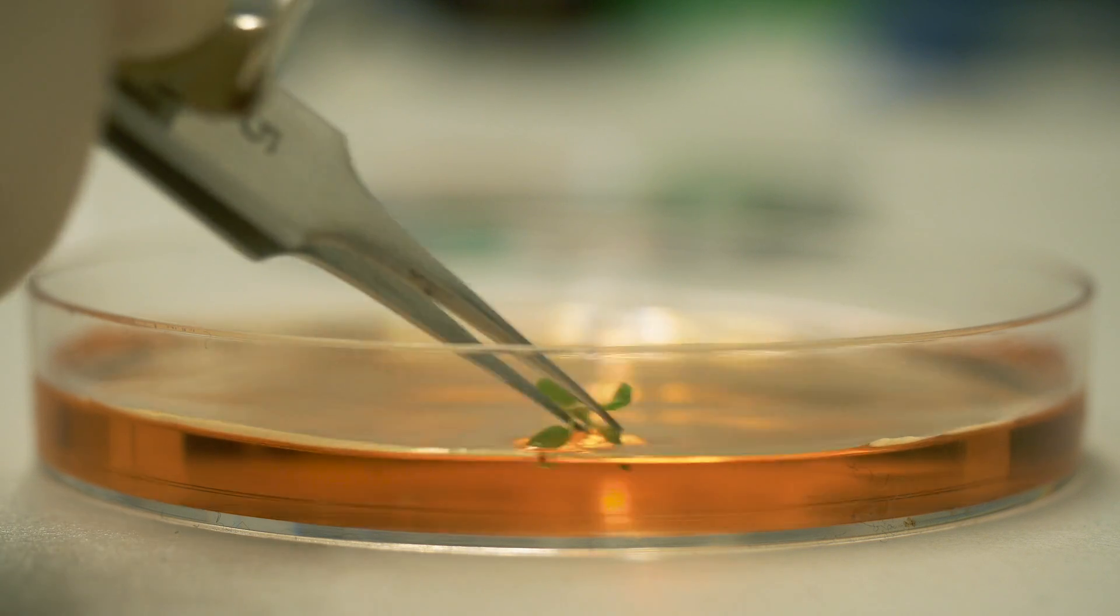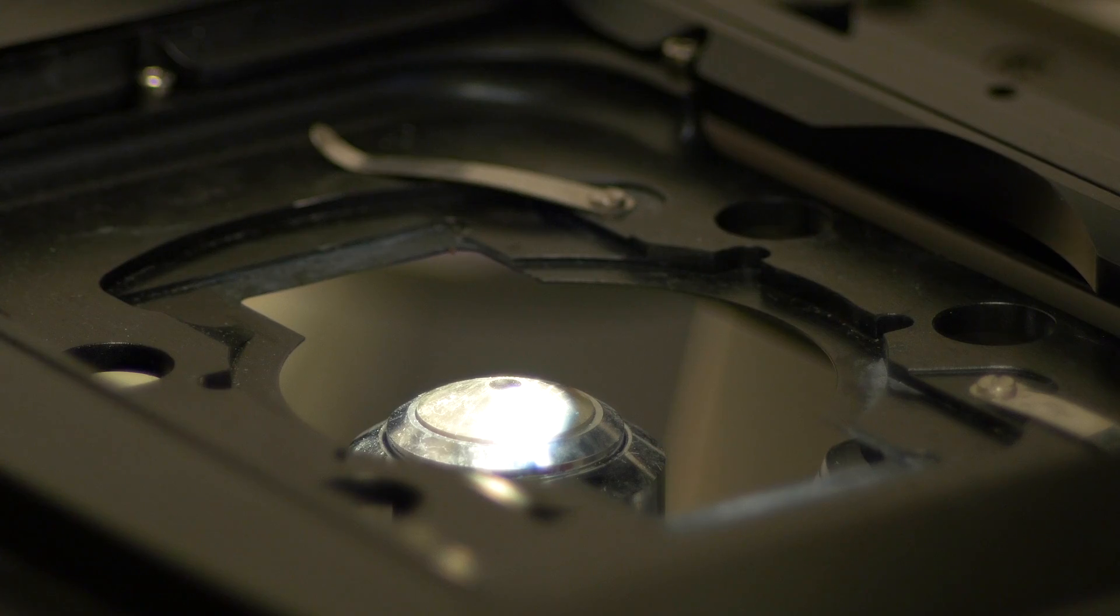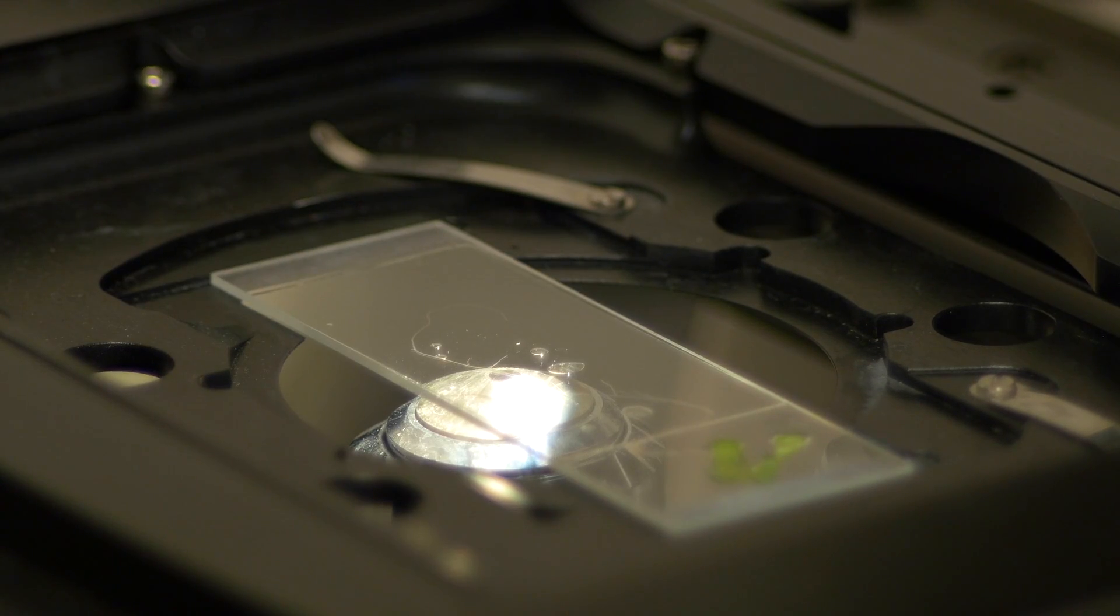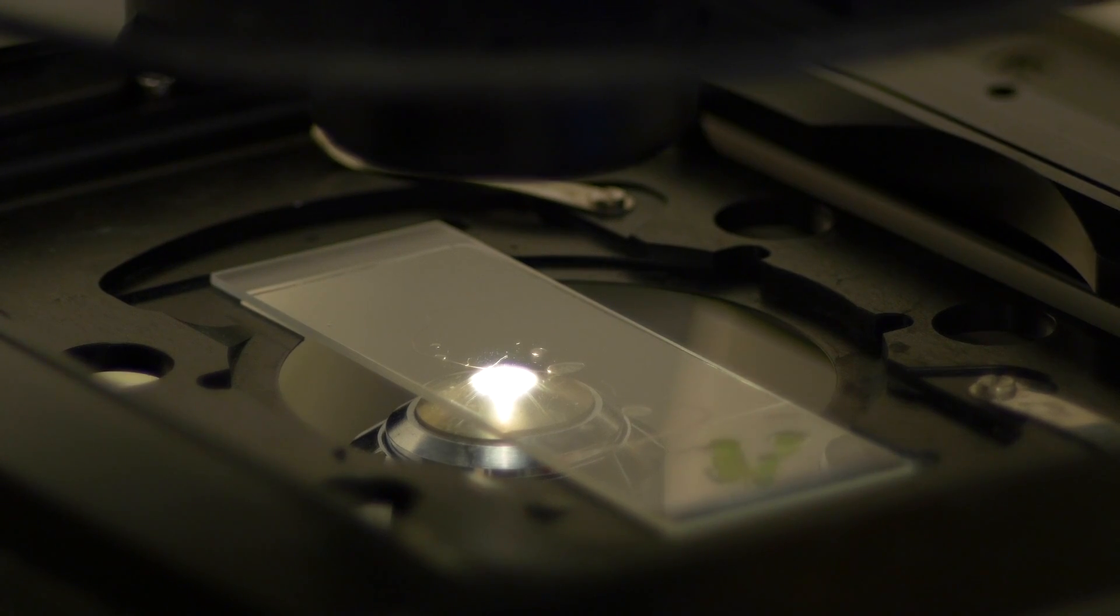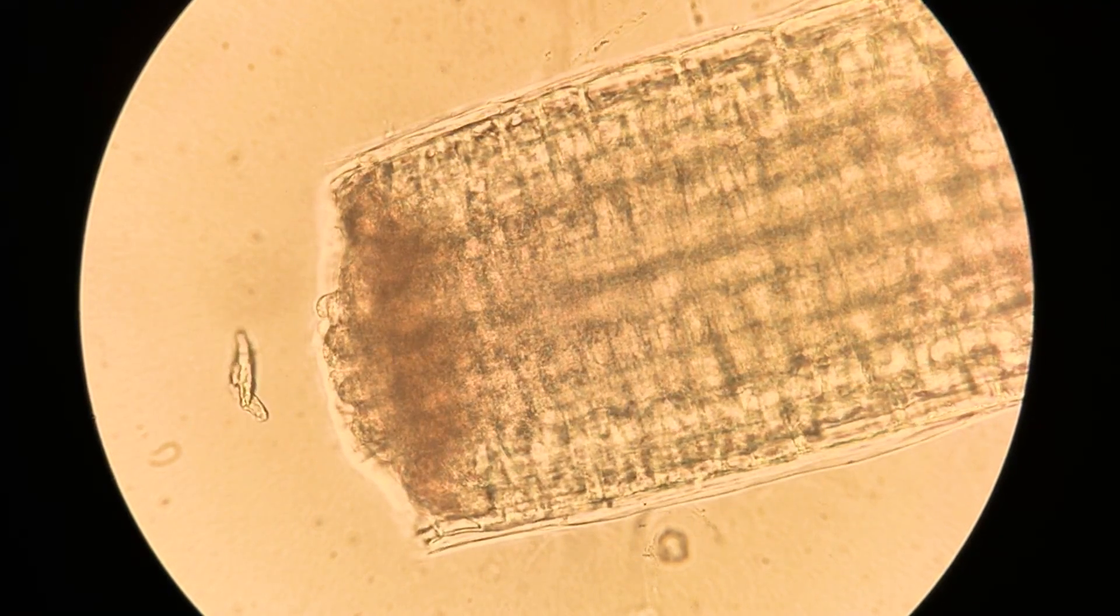These instances where a new root is initiated ask of cells to turn back in time, to leave their current identity, and return to an embryonic-like state, a state that was observed once before within the seed where the root was first made.